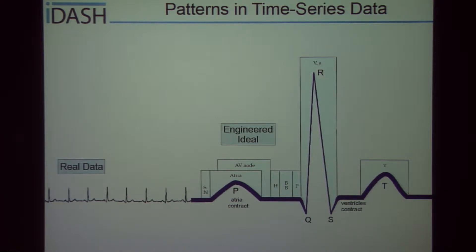We can hopefully find patterns within this CGM data, as we can obviously find patterns within EKG heartbeat data. In that case, the real data is very similar to an engineered ideal, which most cardiologists would know as the PQRST. We're looking to identify similar functional vocabulary in CGM data, which is very regular.